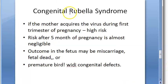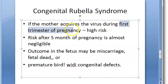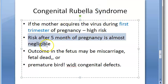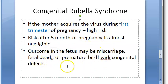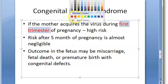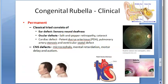Rubella is highly teratogenic, making congenital infection the more serious consequence. If the mother acquires the virus during the first trimester, the risk is highest. After five months of pregnancy, the risk is lower. Outcomes include miscarriage, fetal death, or premature birth with congenital defects.